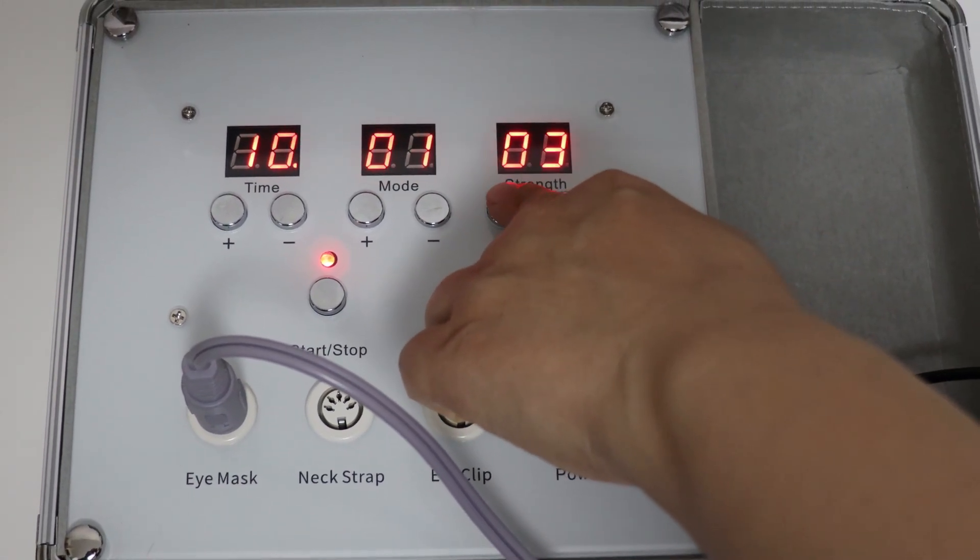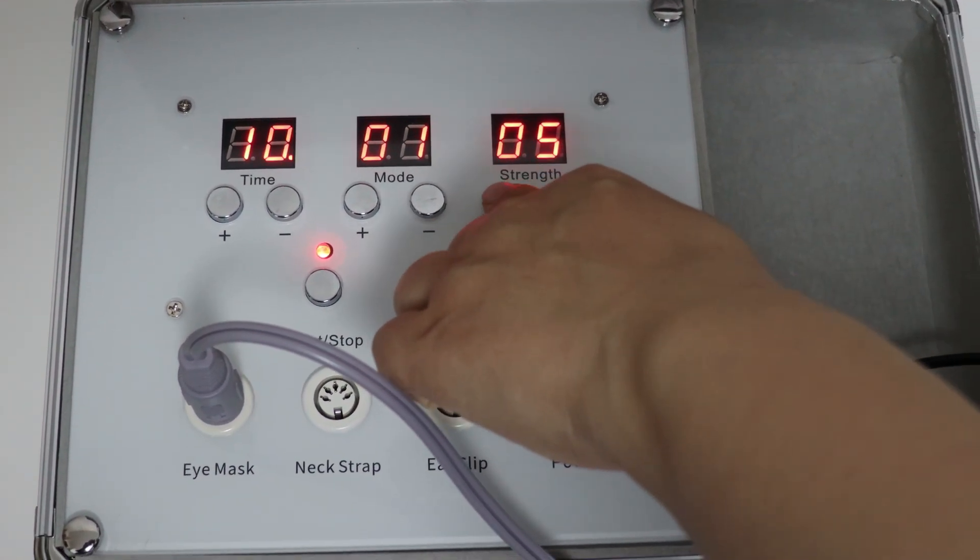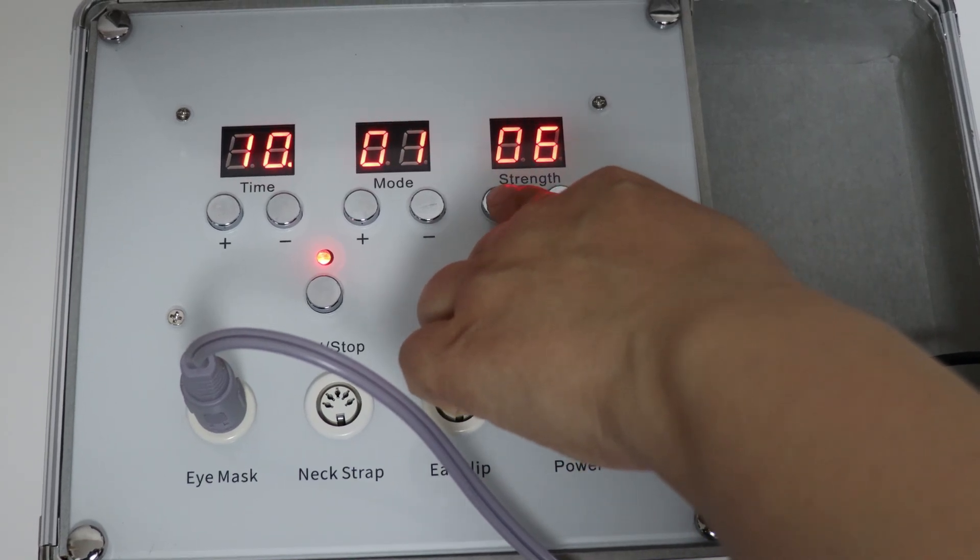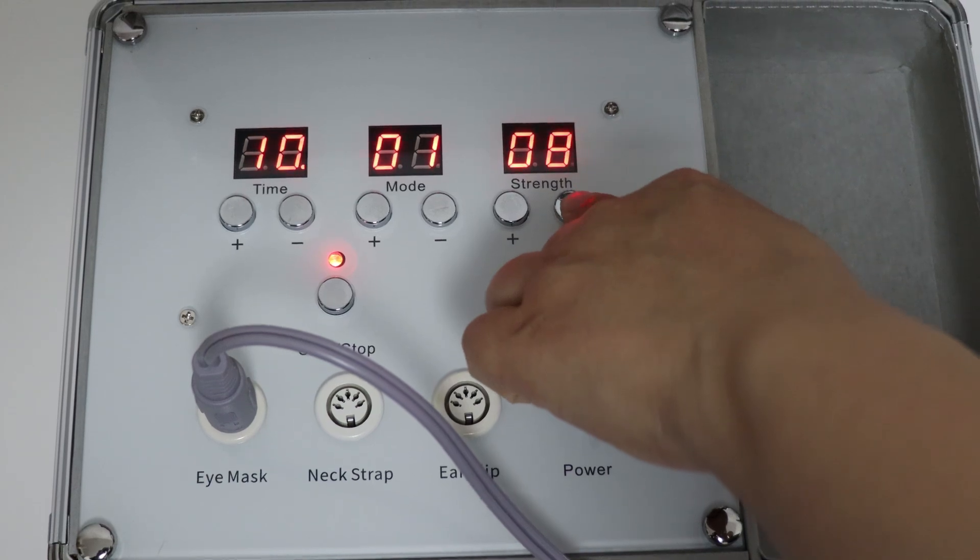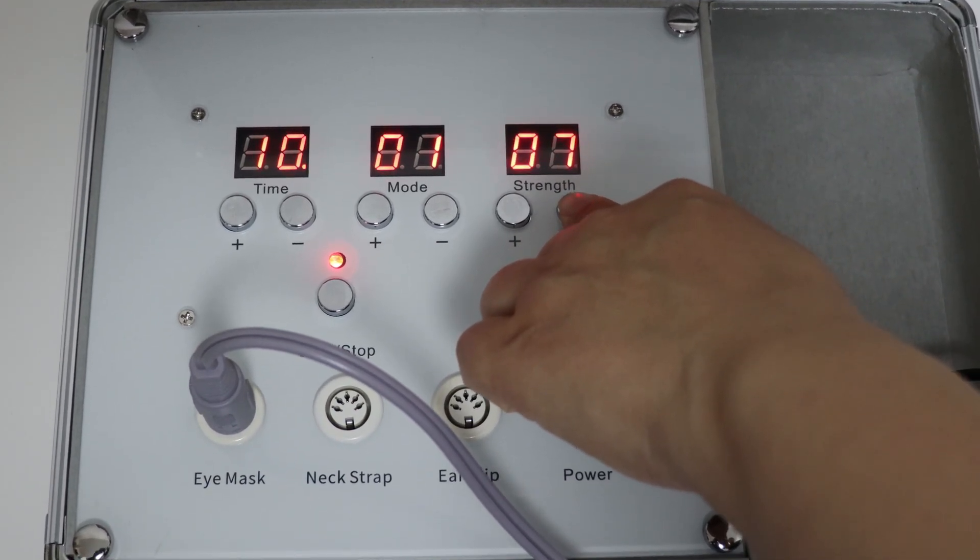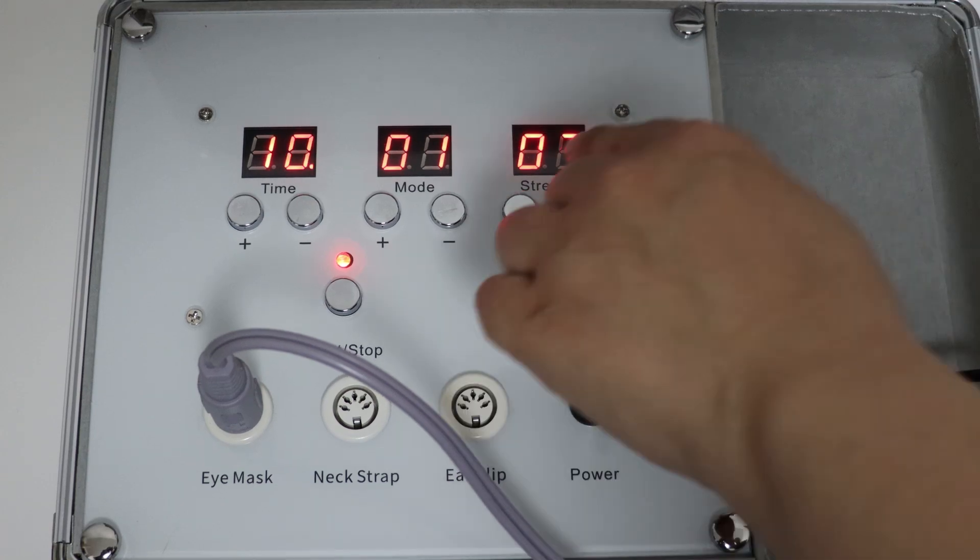As you raise the intensity, you may experience more pressure, numbness, or tenderness around the eyes. All 20 intensity levels are within a safe range for eye health, so you can adjust the intensity to your preference without risk.